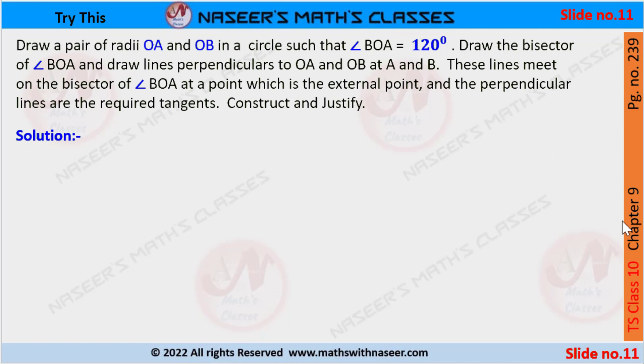This is page number 239, Chapter 9: Tangents to a Circle. Draw a pair of radii OA and OB in a circle such that angle BOA equals 120 degrees. Draw the bisector of angle BOA and draw lines perpendicular to OA and OB at A and B. These lines meet on the bisector of angle BOA.